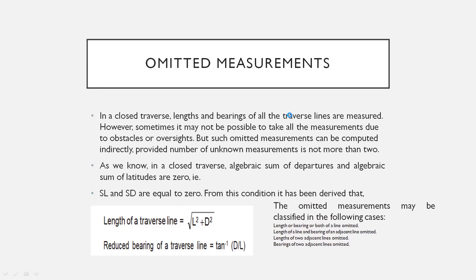Omitted measurements can be computed indirectly, provided the number of unknown measurements is not more than 2. In a closed traversal, the closing formula is the square root of summation of L squared and summation of D squared. We have summation of L and summation of D equal to zero. The length of traversal is the square root of latitude squared plus departure squared, and the reduced bearing is tan inverse of departure divided by latitude.